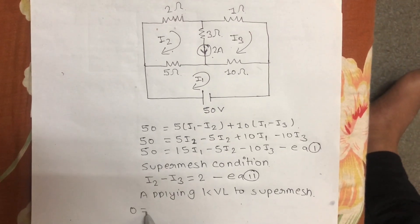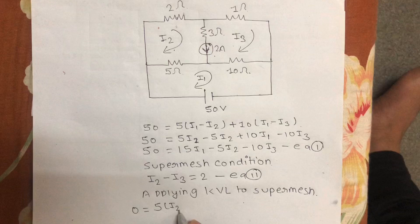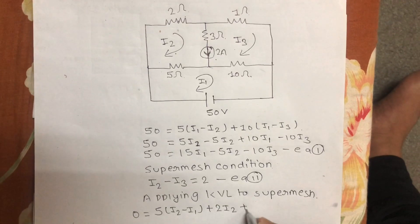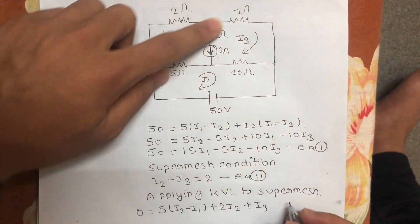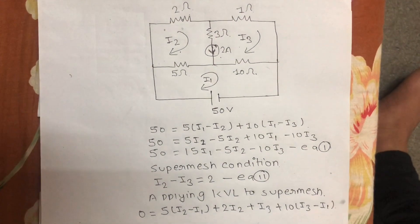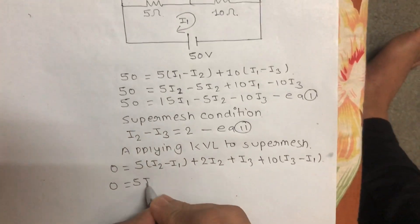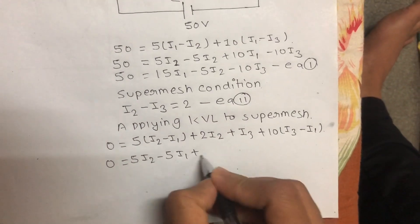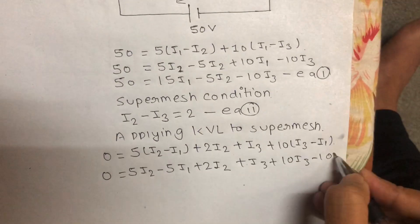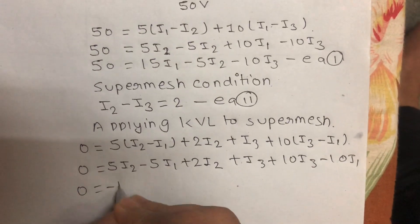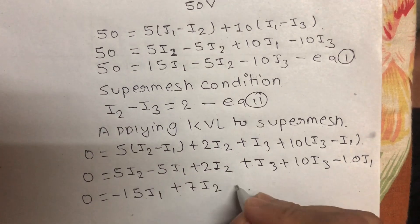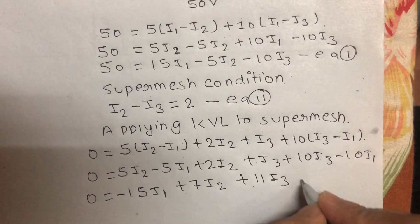Writing the equation: 0 equals 5(I2 minus I1) plus 2(I2 plus I3) plus 10(I3 minus I1). Simplifying: 0 equals minus 15I1 plus 7I2 plus 11I3. This is equation 3.